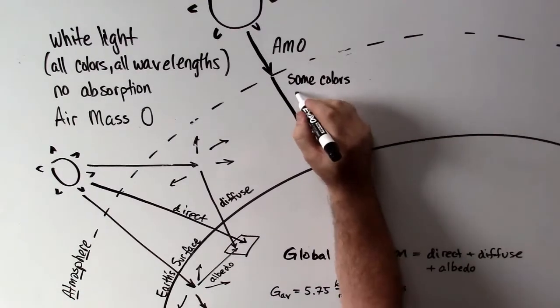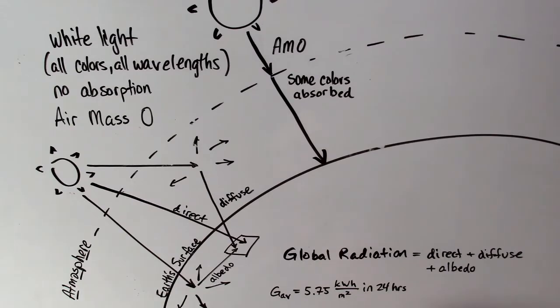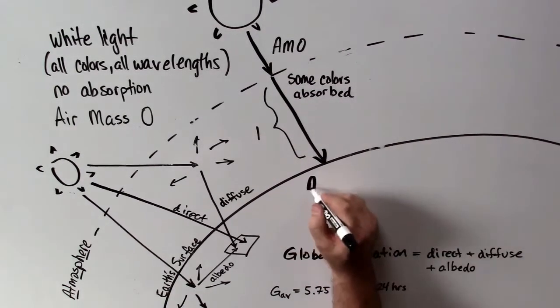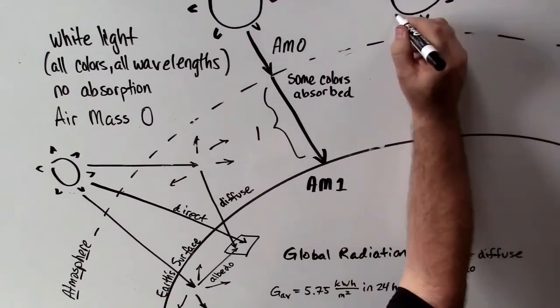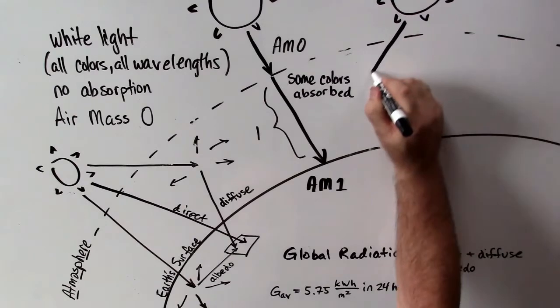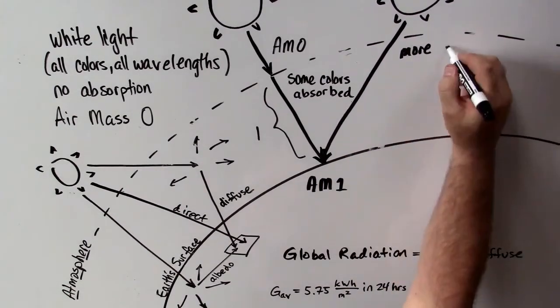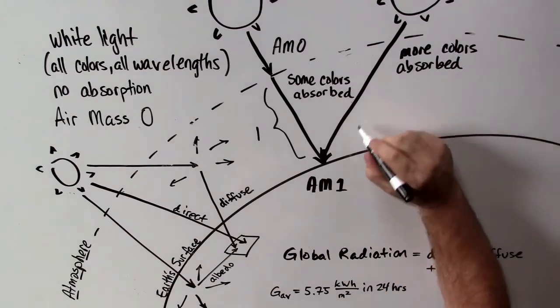However, after the sunlight has gone through one thickness of the atmosphere when it's directly overhead and shining right down on us—we say that's one thickness of the atmosphere—then some colors have been absorbed. Some colors have been scattered, and so no longer do we have the same spectrum of colors that came from the sun, but we have something else that's been partially scattered and absorbed. We call that air mass one spectral content.